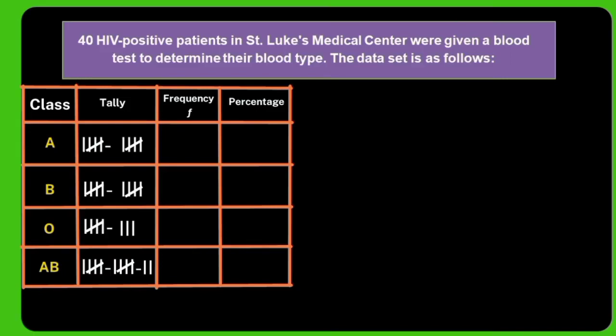To get the frequency, we add all the tally marks. The total frequency for class A is 10, for class B also 10, for class O it is 8, and for class AB it is 12. After computing the frequency, we must not forget to place our n, which is the total number of HIV-positive cases. Our n will be 40, which should equal the total of our data.